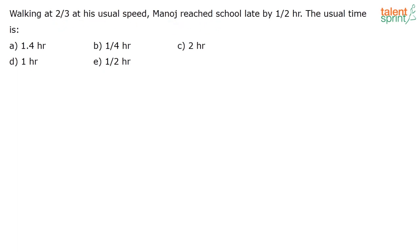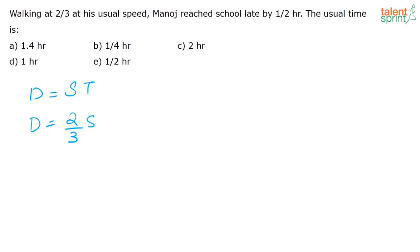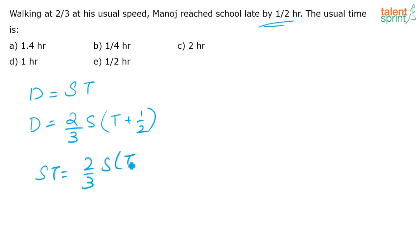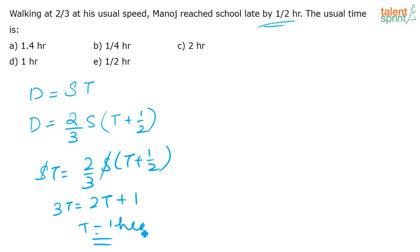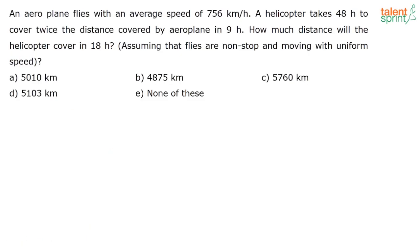Question 4: Walking at 2/3 of his usual speed, Manoj reaches school late by half an hour. Let usual time = T hours. Distance is the same: S·T = (2/3)S·(T + 1/2). Simplifying: 3T = 2T + 1, so T = 1. The usual time is 1 hour. Answer: option D, 1 hour.